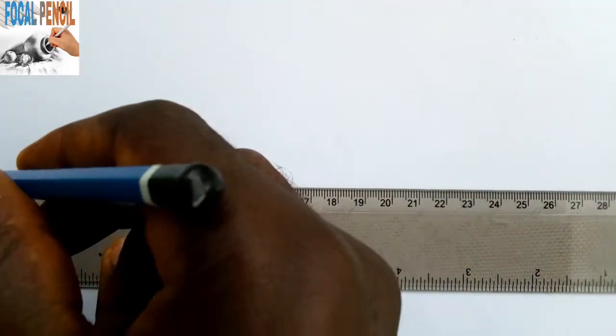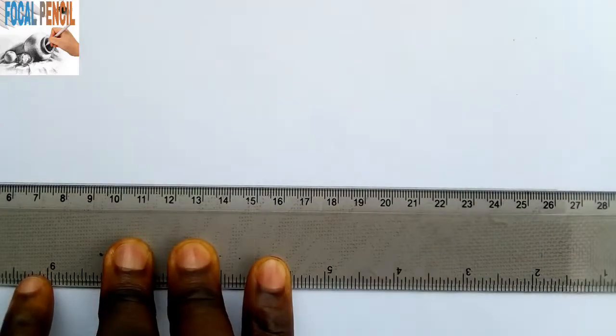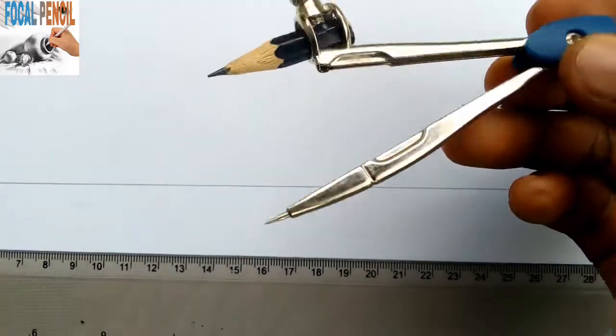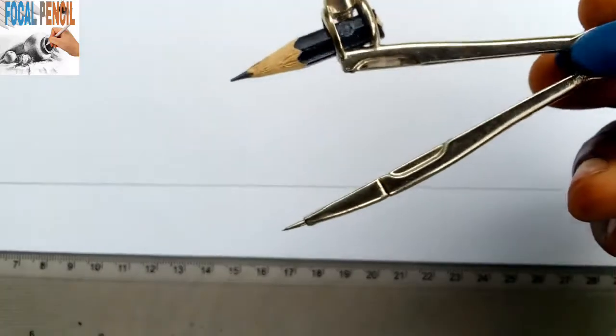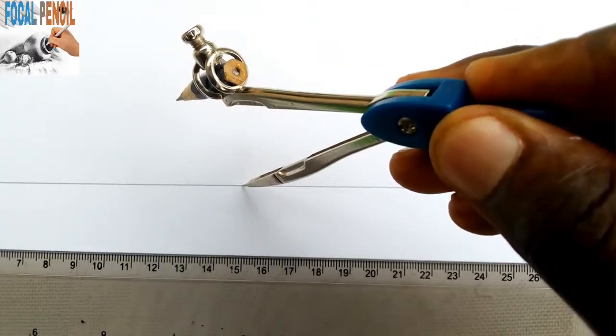First of all, draw a horizontal line using a meter rule. Once you are through with that, you can engage your compass to any length, then you draw a cycle.